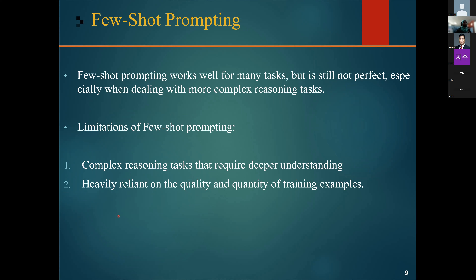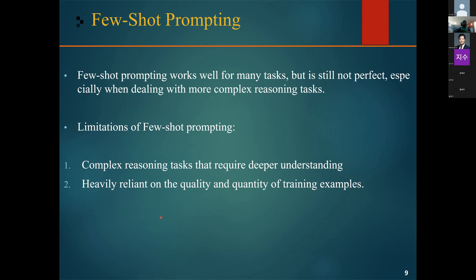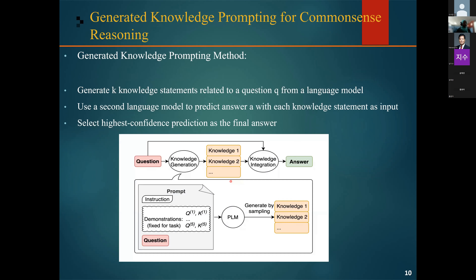Another limitation of few-shot prompting is that it depends heavily on the quality and quantity of the examples. If the training examples are not representative of the data, or if there are too few examples to capture the full range of variability in the task, the model may not perform well.